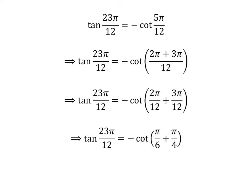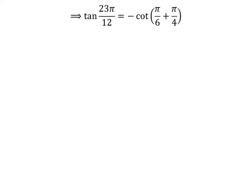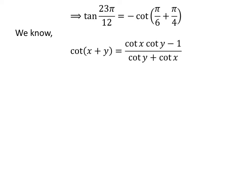Following the above steps, we get tangent of 23 times pi upon 12 is equal to minus cotangent of pi upon 6 plus pi upon 4. We know the trigonometry identity: cotangent of x plus y is equal to cotangent of x times cotangent of y minus 1, upon cotangent of y plus cotangent of x. The proof is given in the linked video in the description.